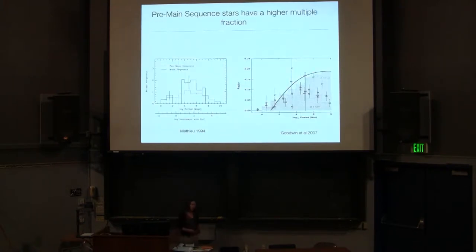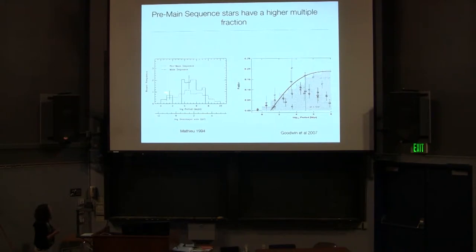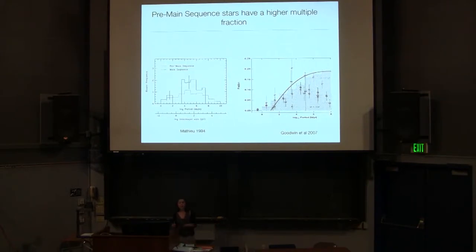Building on that, we also know that if we look at pre-main sequence stars, they have a much higher multiplicity fraction than their counterparts in the field. The gold standard paper is Matthew 1994 — this shows distribution in period on the x-axis and binary frequency on the y-axis. The main sequence is the dashed line and the pre-main sequence is the solid line. You can see there's an abundance of pre-main sequence binaries compared to main sequence binaries, which is again suggesting to us that binaries are really one of the dominant modes of the star formation process as a whole.